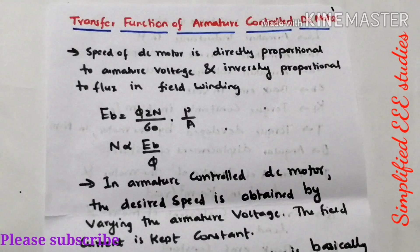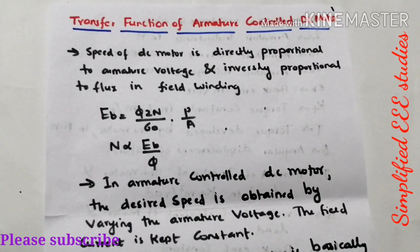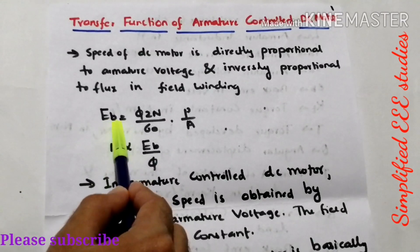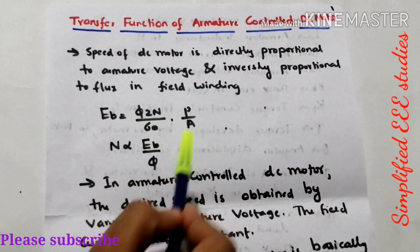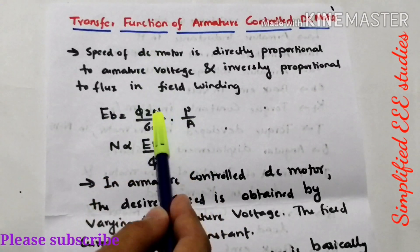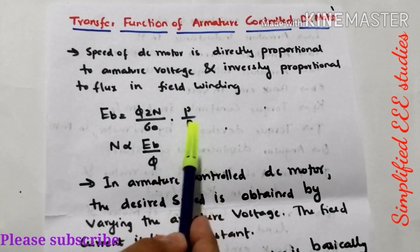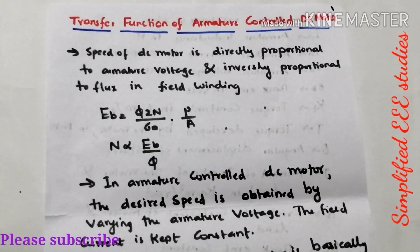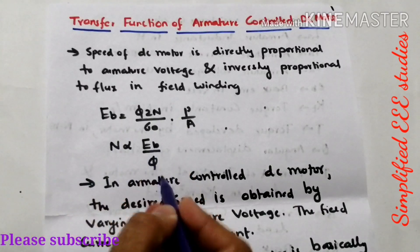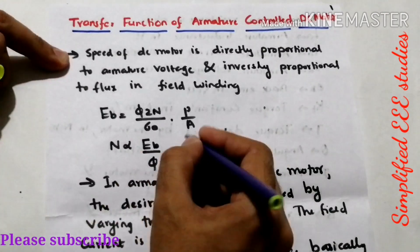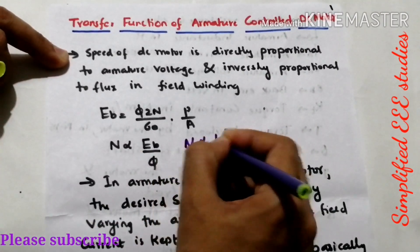In case of armature control DC motor, the field is kept constant where the armature voltage is going to vary. Now let us consider the general equation for back EMF, that is given by Eb = φZN/60 × P/A, where φ is the flux, Z is the number of conductors, N is the speed of motor, P is the number of poles, and A is the armature conductor per parallel path. From this equation I can write N is directly proportional to Eb/φ, or N is proportional to 1/φ.